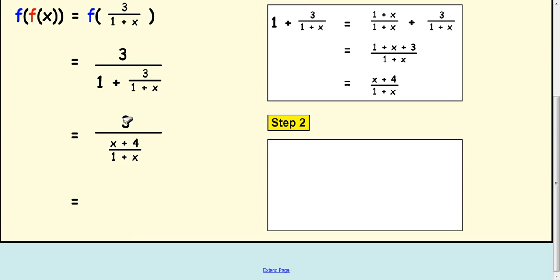An easier way to write that is 3 divided by all of this, written sideways: 3 ÷ (x+4)/(1+x). From fraction knowledge, to divide by this, you multiply and flip it over. That's the same as 3/1 ÷ (x+4)/(1+x), which is 3/1 × (1+x)/(x+4).